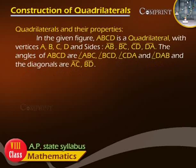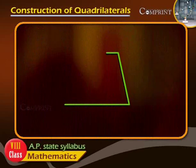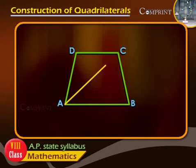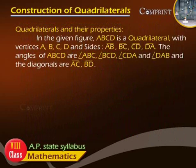Quadrilaterals and their properties. In the given figure, ABCD is a quadrilateral with vertices A, B, C, D and sides AB, BC, CD and DA. The angles of ABCD are angle ABC, angle BCD, angle CDA and angle DAB, and the diagonals are AC and BD.